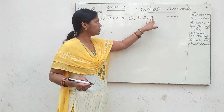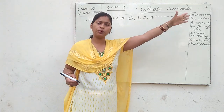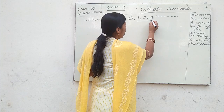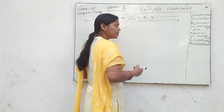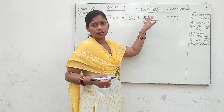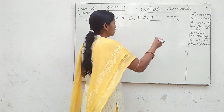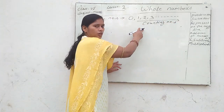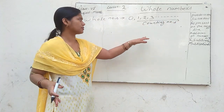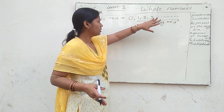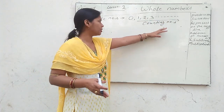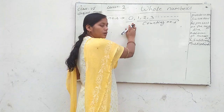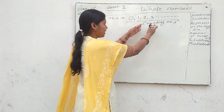Whole numbers are 0, 1, 2, 3, 4, 5 up to infinity. The numbers 1, 2, 3 up to infinity are your natural numbers — your counting numbers. So whole numbers are a combination of 0 and the natural numbers, meaning we are only adding 0 to the counting numbers.